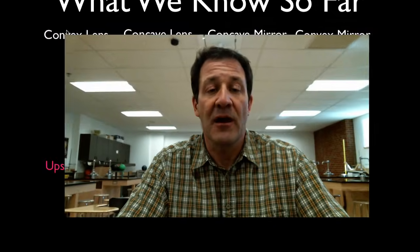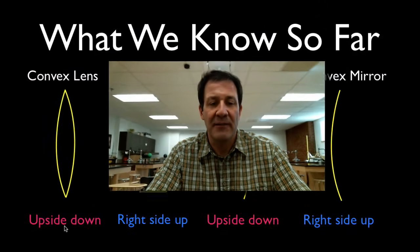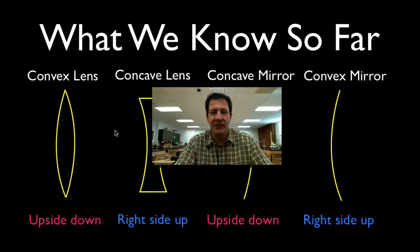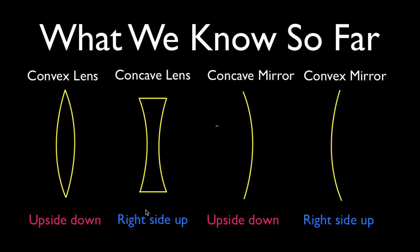Let's summarize what we've seen so far. Convex lens: image upside down. Concave lens: image right side up. Concave mirror: image upside down. And then the convex mirror: the image was right side up. So what is the same about these and what is different about them that causes those images to appear that way?